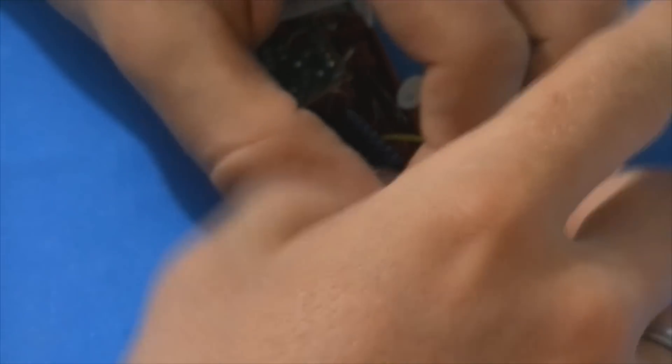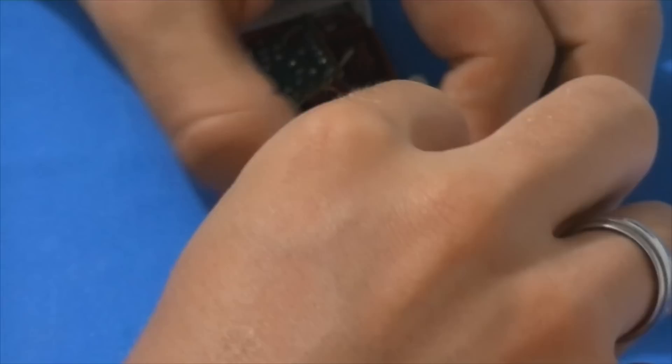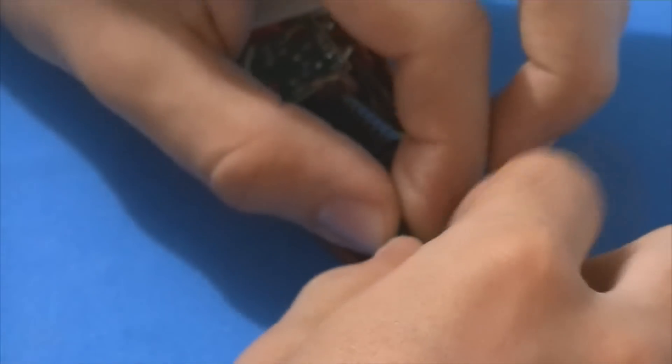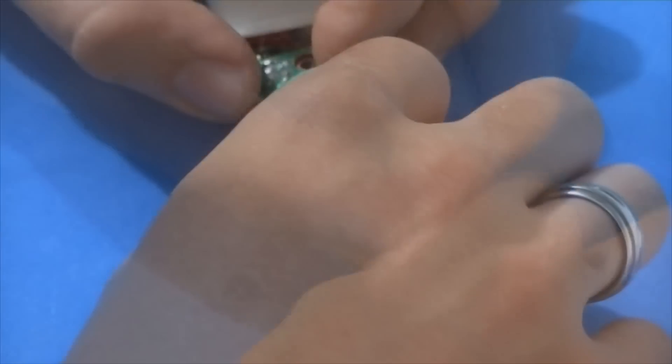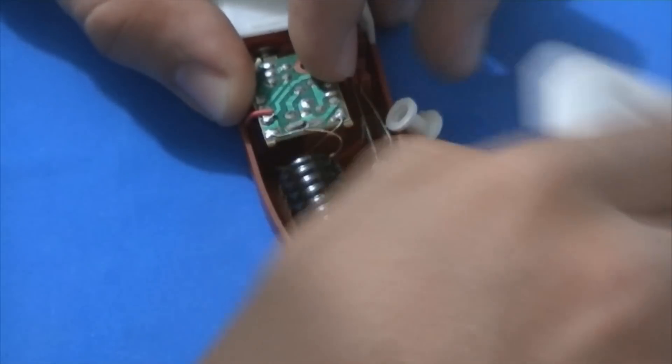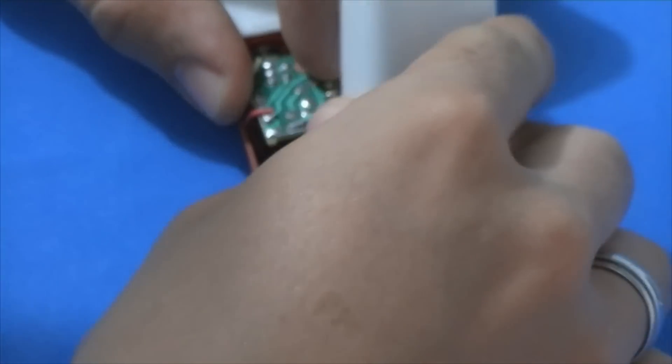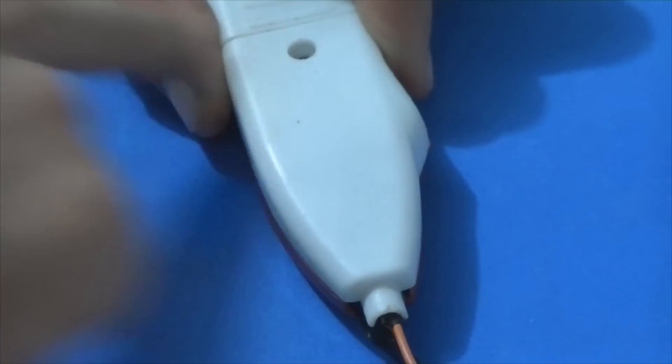Se você não sabe soldar, você pode retirar um pedaço da capa do fio e emendar do jeito que eu fiz na lâmpada também. E agora vamos fechar o nosso acendedor. Acomodamos o botão, uma praquinha, e é só parafusar.